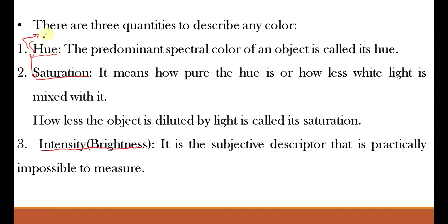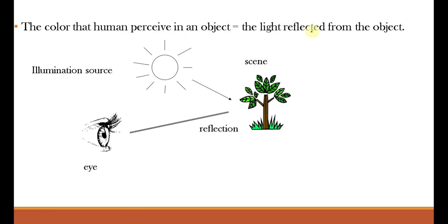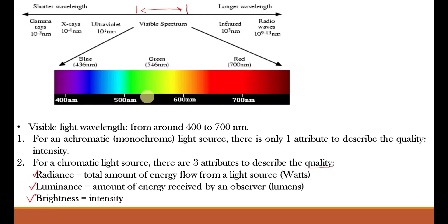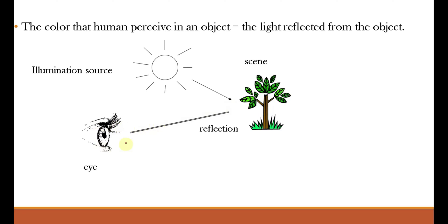Hue plus saturation equals color, chroma, or chrominance, and brightness is the luminance. For color television, the luminance signal and the chrominance signals are sent separately. The color that humans perceive in an object is the light reflected from the object. For example, when sunlight falls on green leaves, the green wavelength — ranging from 500 to 570 nanometers — is reflected and perceived by the eye, while other wavelengths are absorbed by the scene.